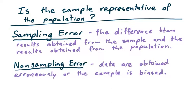Another type of error that could occur is what we call a non-sampling error. Non-sampling error occurs when the data are obtained erroneously or the sample is biased. For example, you could be taking weights and the scale that you're using might be broken.